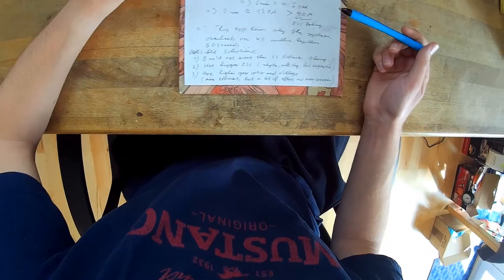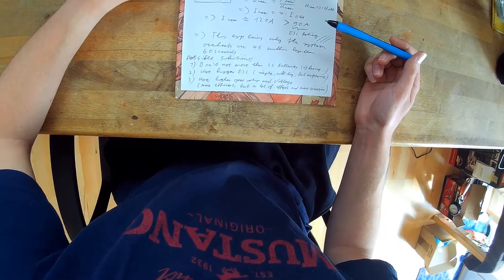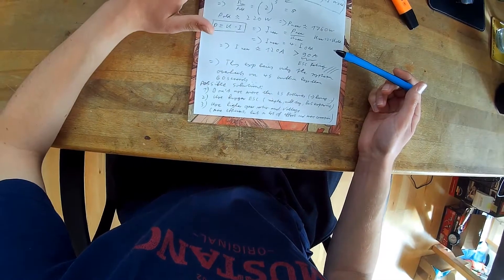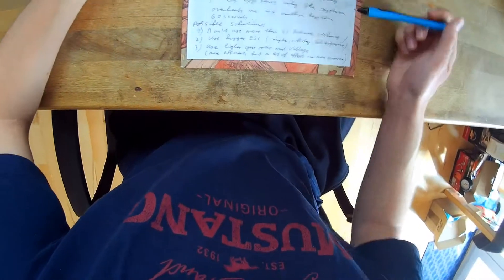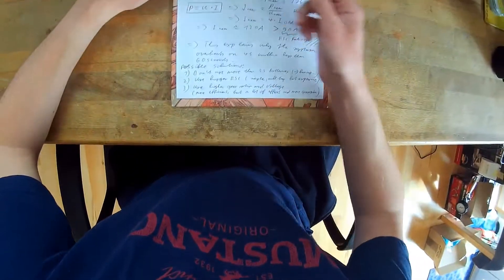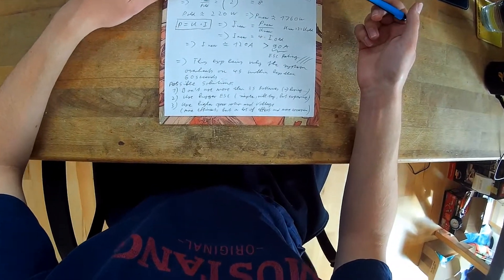So this explains why the system overheats on the 4S battery within less than 60 seconds and just shuts off. And that's obviously very frustrating if you want to go fast. Fast in that case is maybe around 10 kilometers an hour in the kayak. And with the 2S you get about 6, 6.5 if you're optimistic.